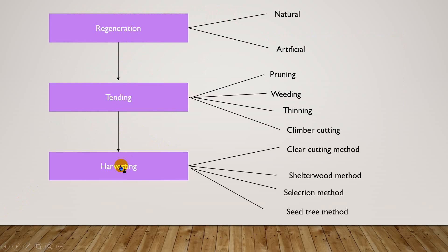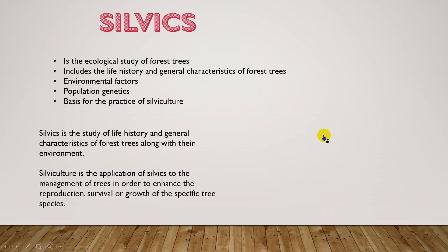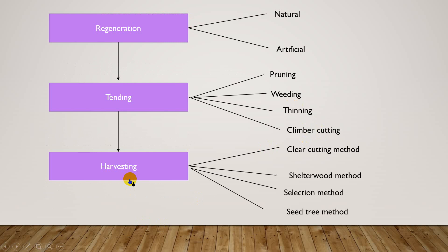To summarize, the silvicultural system includes regeneration, tending, and harvesting. Regeneration is of two types: natural and artificial. Tending includes pruning, weeding, thinning, and climber cutting. Harvesting can be done by different methods depending on environmental and land conditions. These methods include the clear-cutting system, the shelterwood method, the selection method, and the seed tree method. These will be covered in detail later.